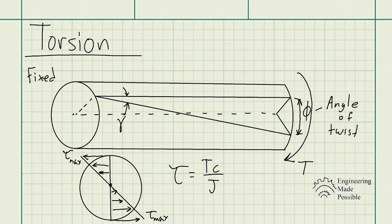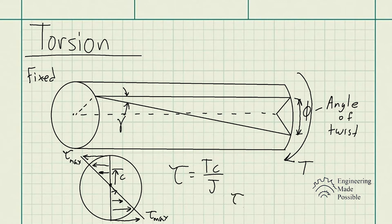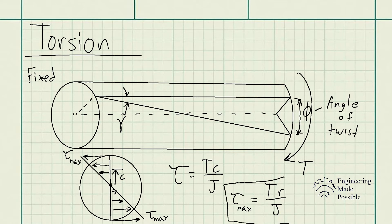The shear stress is equivalent to T, which is the torque, times C, which is the distance from the center — at any given point from the center of the rod all the way out to the outer edge — divided by J, the polar moment of inertia. For design we always use the worst case, so the maximum shear stress is torque times the radius divided by the polar moment of inertia.